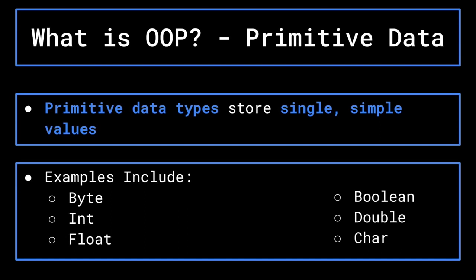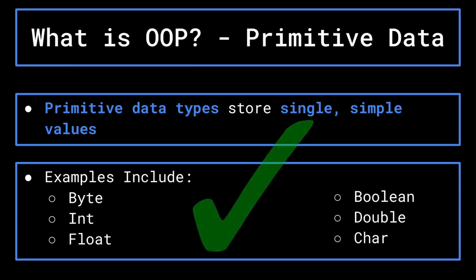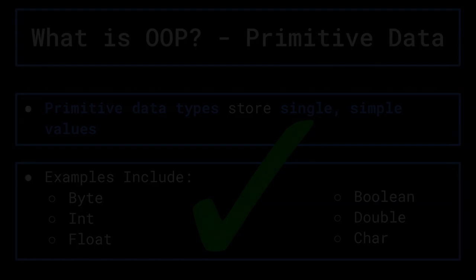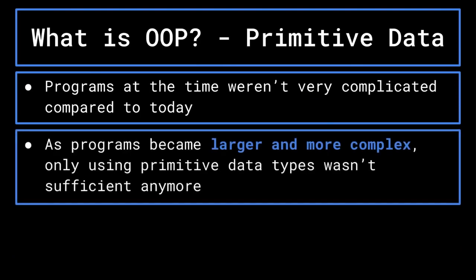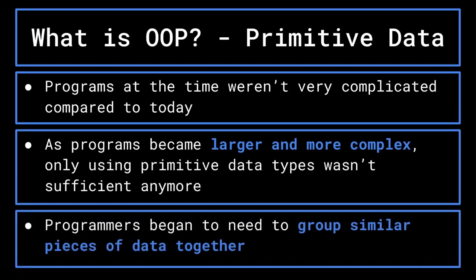These primitive types only act to store a single piece of data of a certain kind. And for a while, when programming was still developing, this was just fine. Many programs being written at the time weren't complex by today's standards, and programmers could get away with only using these primitive types. However, as programs became larger and more complex, primitive data types weren't really cutting it anymore.